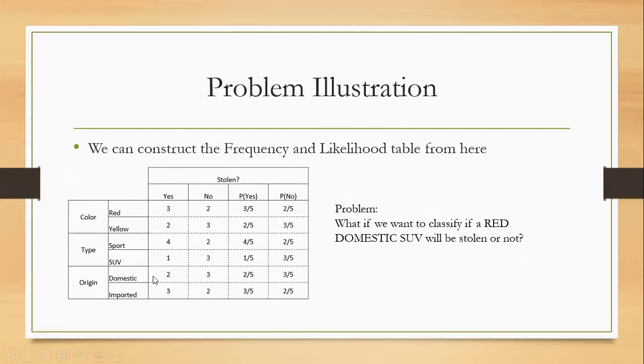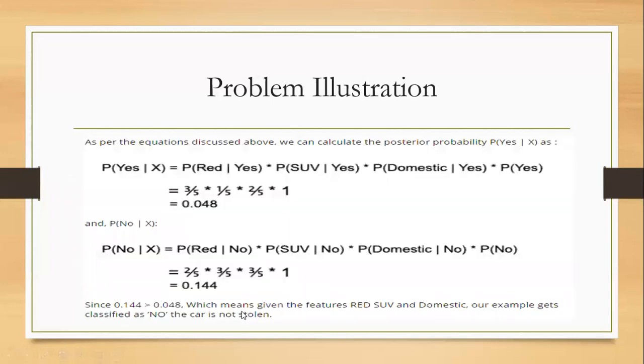We also have the frequency of a red color being stolen, that's three. And then those that are not, we have two. And getting the probabilities of each, we have the probability of yes, which is three over five, and no, two over five. And we do the rest for all of the attributes that we have here.